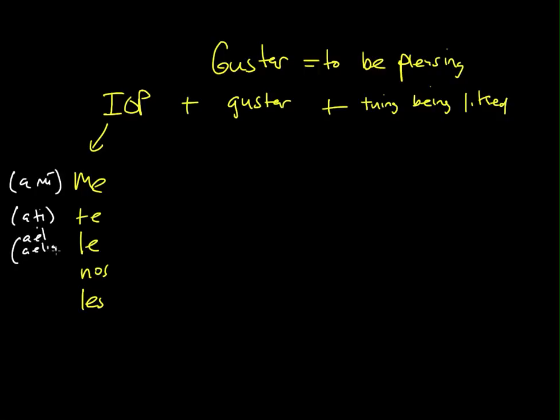él, a ella, a usted, a nosotros, a nosotras, and the last one for les we could say a ellos, a ellas, and a ustedes. Now, the next thing we need in our formula is a form of gustar, and we can